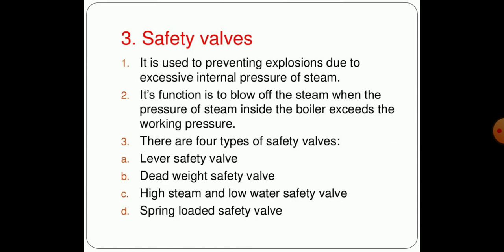The third important part is the safety valve and it is used to prevent explosion due to excessive internal pressure of the steam. It functions to blow off the steam when the pressure of the steam inside the boiler exceeds the working pressure. There are four types of safety valves: lever safety valve, dead weight safety valve, high steam and low water safety valve, and spring loaded safety valves.